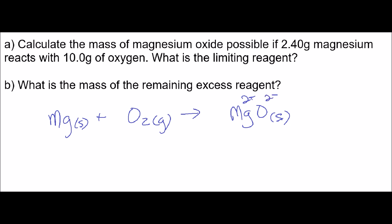Magnesium is a two-positive cation and oxygen is a two-negative anion — they cancel out to give MgO. Now let's balance this. We need a two in front of magnesium because there are two oxygens on the left side, and we also need a two in front of MgO because now there are two magnesiums on the right side. So the balanced equation is 2Mg + O₂ → 2MgO.